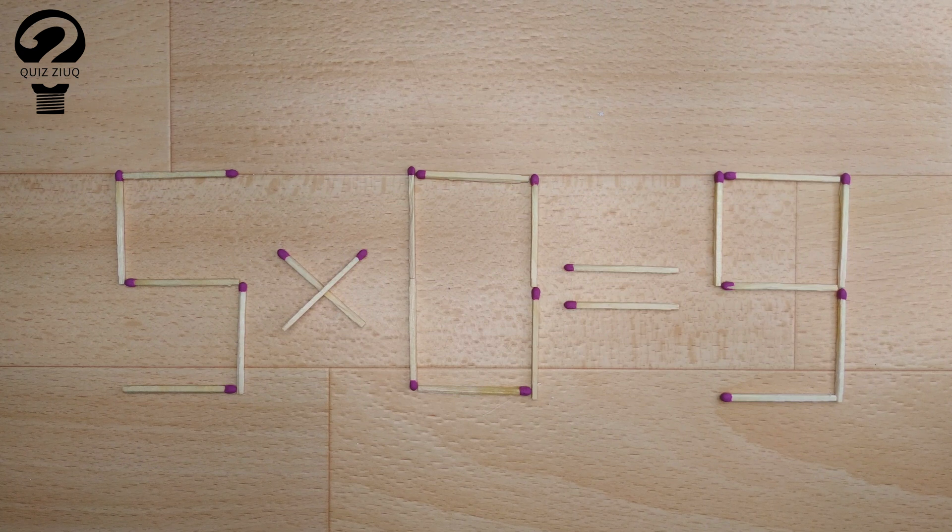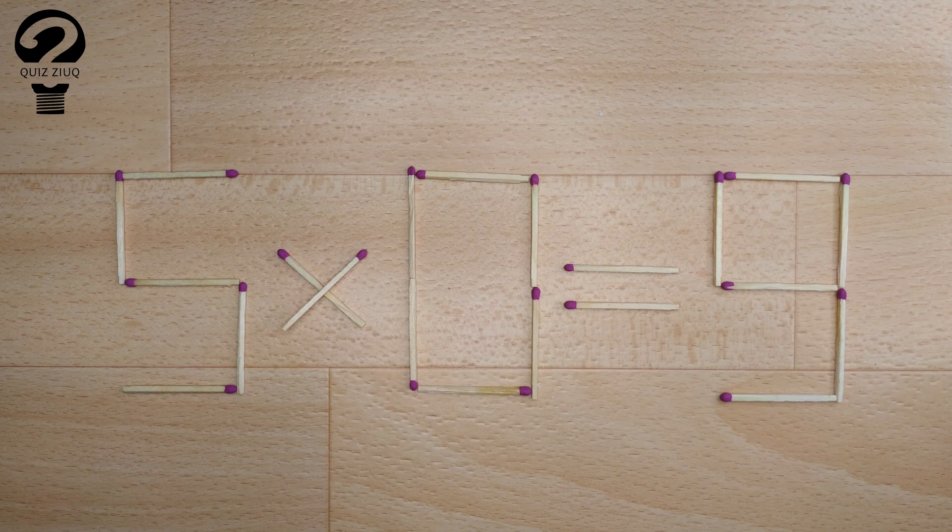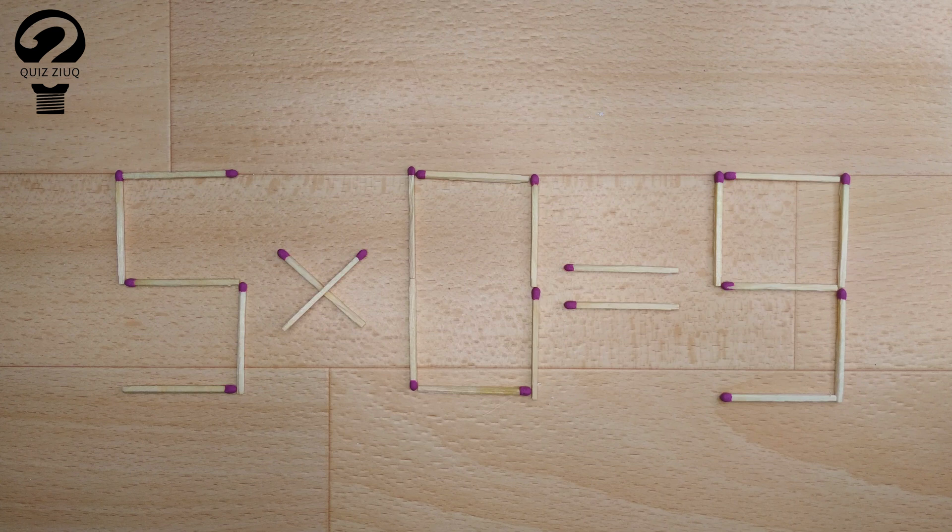Here's the next puzzle. We have this equation. Five times zero equals nine. Our equation is incorrect, and we need to move two matches to make our equation correct.